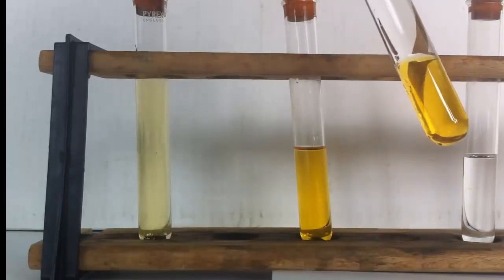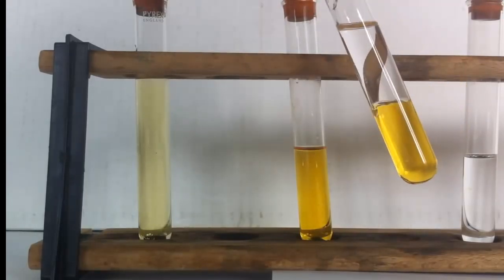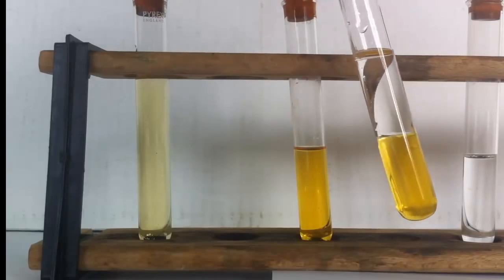So at the moment we've got the bromine water on the bottom. That's an aqueous solution of bromine. And on the top we've got the cyclohexene.